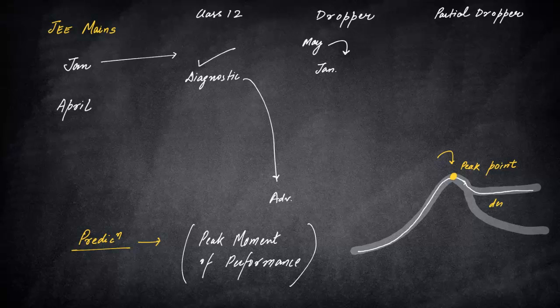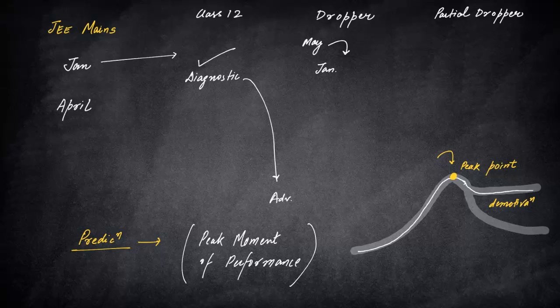Because here a little bit of demotivation starts happening - next stage. If you are demotivated here, then there is no logic of giving a test when you are already in the demotivated stage. And with my experience, what I have seen is the peak point of a good student - now this is interesting - generally comes in the month of January, February. Generally comes in the month of January, February. That is the peak point.